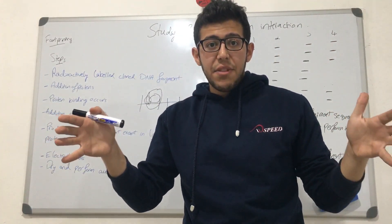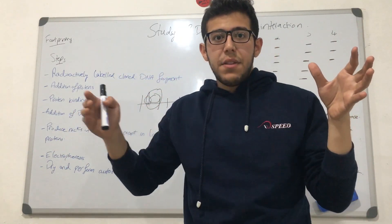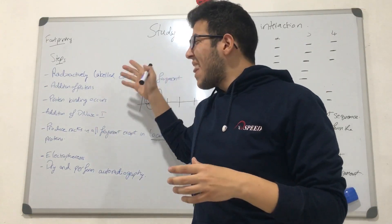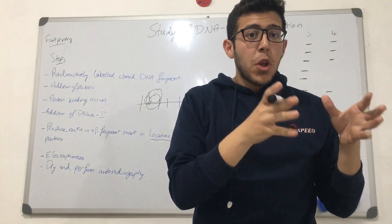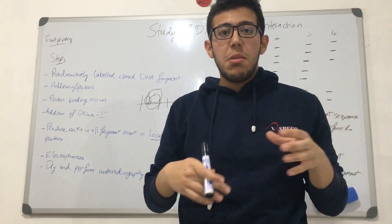We have a DNA fragment, and this DNA fragment is bound by particular proteins at different locations. Our main goal of this method is to know the locations, or the sizes, of the fragments where these proteins are bound. The steps that involve this experiment are as follows.